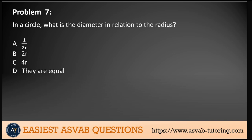Problem 7: In a circle, what is the diameter in relation to the radius? Well, the diameter equals two times the radius. So the answer is 2R.